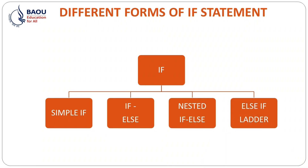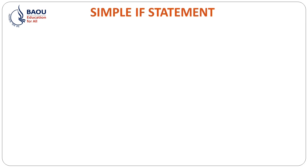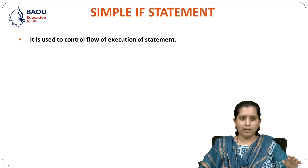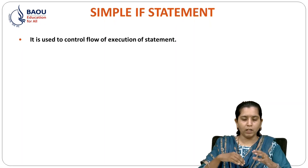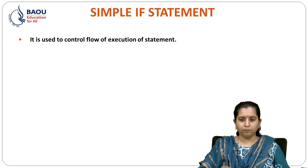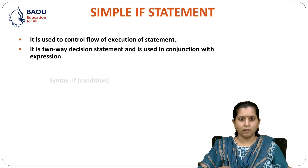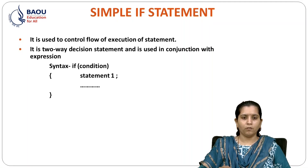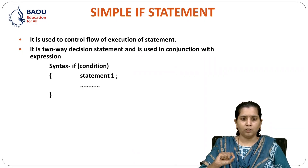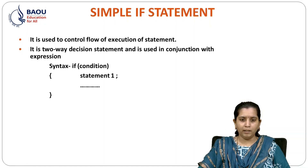First of all, we will see simple IF in detail. The simple IF statement is the simplest decision making statement. It allows the execution of a block of code if the given condition is true. The body of the IF condition is executed only if the condition is true. Now let's see the syntax of IF condition: IF is a keyword, followed by the condition applicable to the statement, and then the group of statements inside the IF block will be executed.